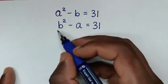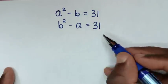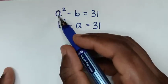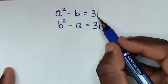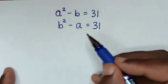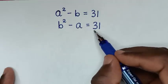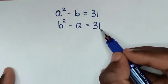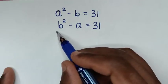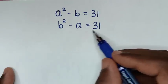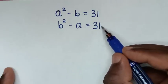Welcome. We are going to solve this math problem: a squared minus b is equal to 31, and b squared minus a is equal to 31. We need to find the values of a and b from these two systems of equations.